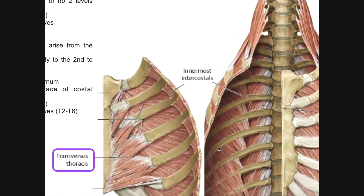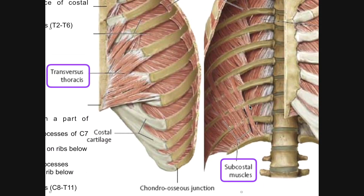If we zoom in here, looking at this particular subcostal muscle, the origin is actually going to be on the rib above — it's actually a superior attachment. And then the insertion is going to be the superior border of a rib, generally two levels below. So this right here would be rib number 10, two levels below rib number 12.